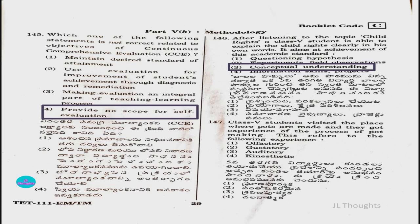Question number 147: Students visited a place where pots are made and got the experience of the process of pot making. This refers to which experience — olfactory, gustatory, auditory, or kinesthetic? The answer is option four, kinesthetic, because the students are visiting and getting hands-on experience of the process, involving physical movement and making.